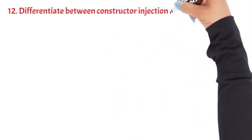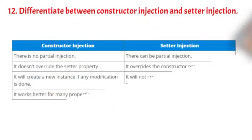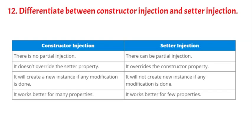Question 12: Differentiate between constructor injection and setter injection. Constructor injection vs. setter injection: There is no partial injection in constructor injection, whereas there can be partial injection in setter injection. Constructor injection doesn't override the setter property, while setter injection overrides the constructor property. Constructor injection will create a new instance if any modification is done; setter injection will not. Constructor injection works better for many properties; setter injection works better for few properties.